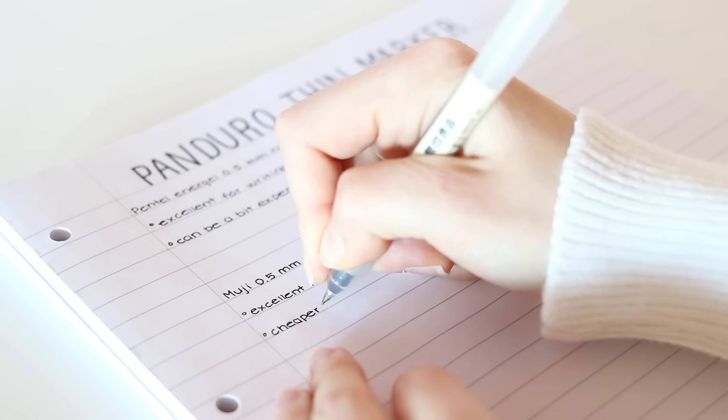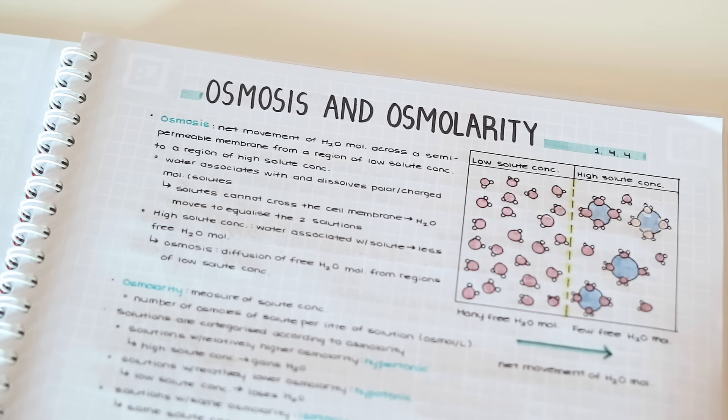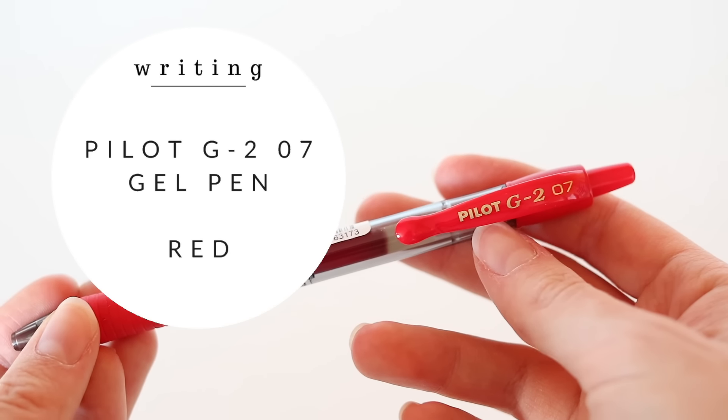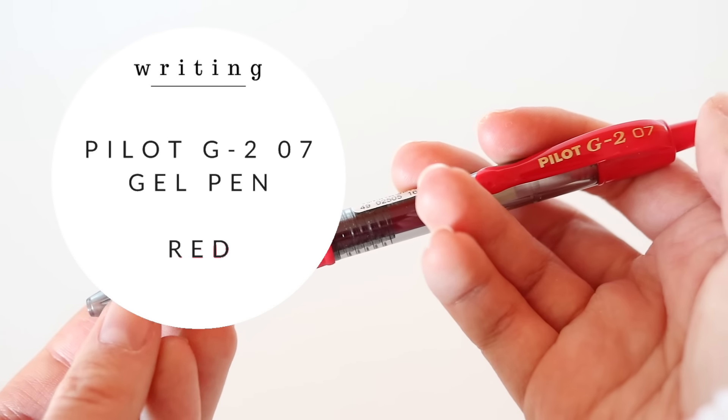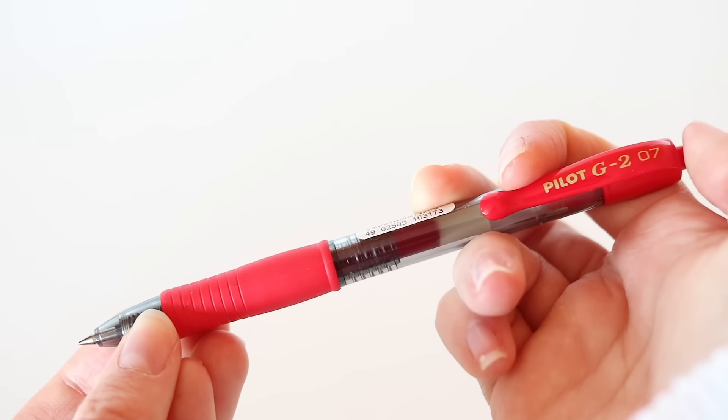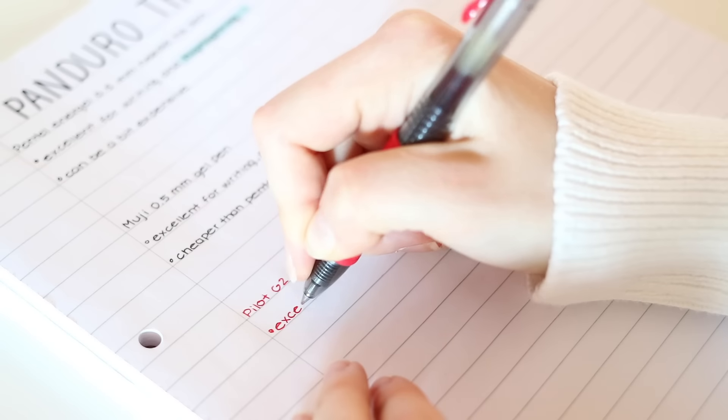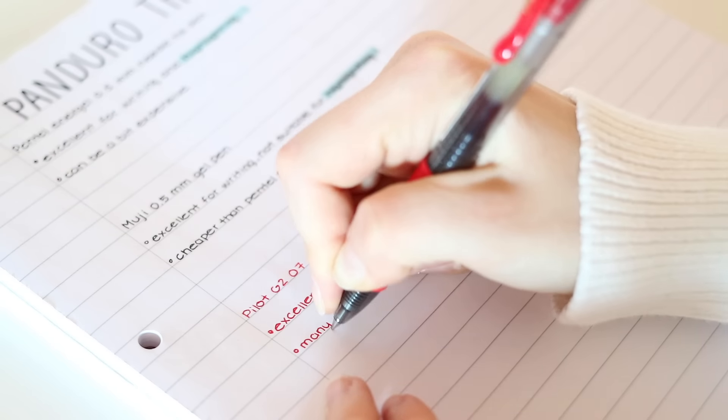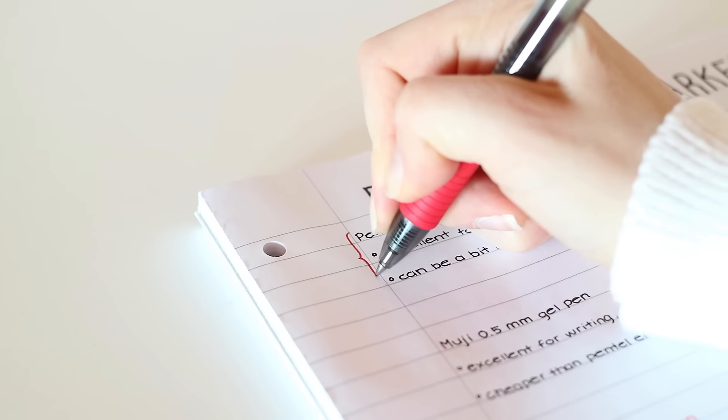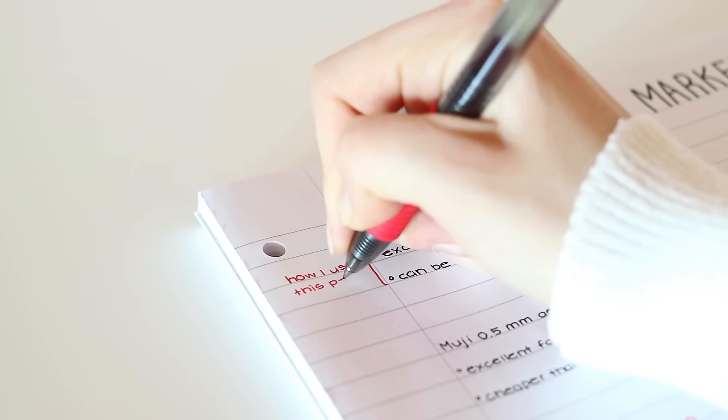I just sometimes use it for writing my notes and I always use the Pentel EnerGel with highlighters and for diagrams. Another type of pen that I really like are the Pilot G2 07. They come in a lot of different colors. I have the red one and I mainly use it for annotating my notes and also for correction when I'm doing practice questions.